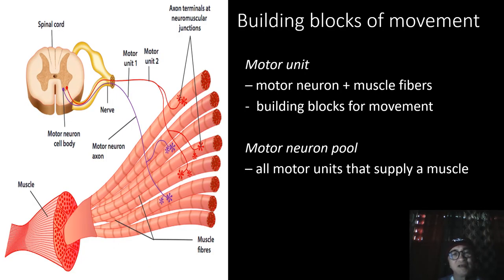A motor neuron and the muscle fibers it innervates is called a motor unit. The motor unit is the building block of body movements. Most muscles are innervated by many motor neurons. All motor units that activate a muscle are called its motor neuron pool. Most motor neuron pools are located at the brainstem or at the spinal cord, which directly triggers muscle contractions in the specific muscles of the head, body, and limbs.